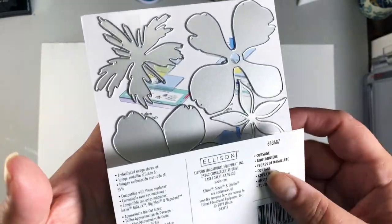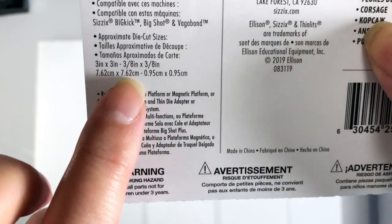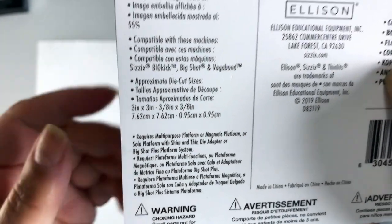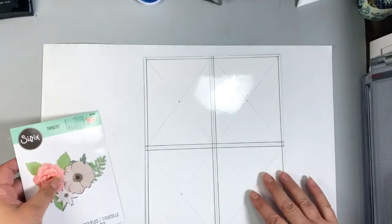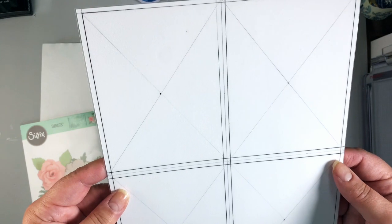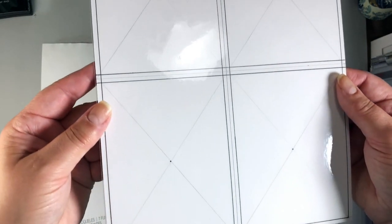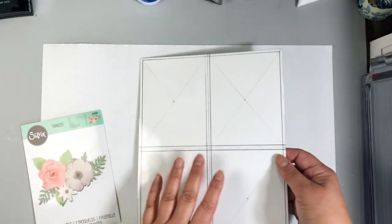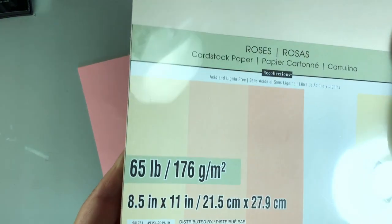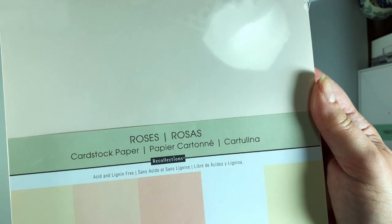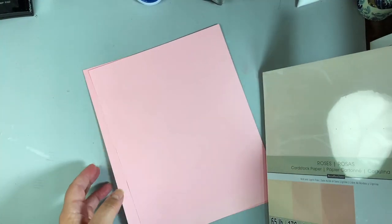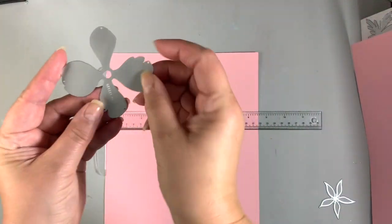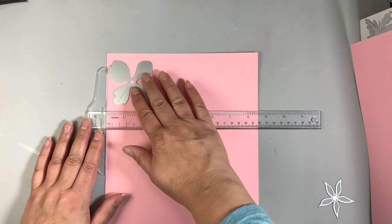I'm going to be using a couple of die cut flowers and leaves from this Sizzix die set, paying particular attention to the size of each so I can use that as a guide on an eight and a half by eleven inch piece of cardstock. This template was something I created in my last video, and I'll link to it so you can see how I used it to mass-produce cards. I'm using the same technique to get four cards from one sheet of cardstock.